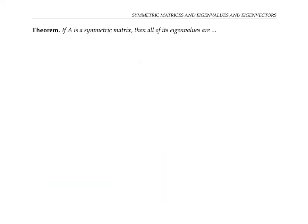The first fact we want to prove is that if A is a symmetric matrix, then all of its eigenvalues are real numbers. To prove this, let's suppose that lambda is an eigenvalue and V is an eigenvector.